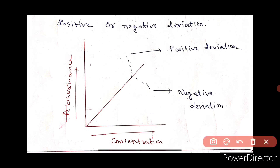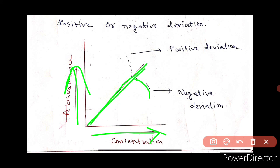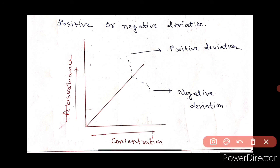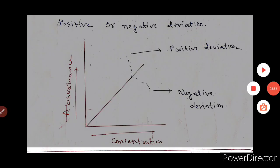This is the graph showing the absorbance and concentration relationship. The X-axis shows concentration and the Y-axis shows absorbance. This is the ideal straight-line path. If the path shifts towards the X-axis, we call it Negative Deviation. If the path shifts towards the Y-axis, we call it Positive Deviation. So that was today's video. See you in the next video. Thank you so much for watching.